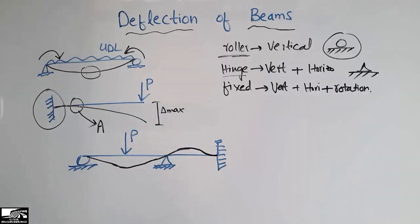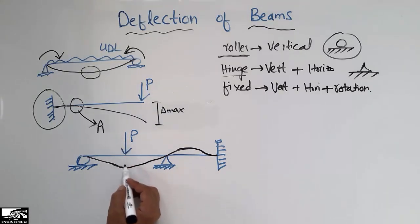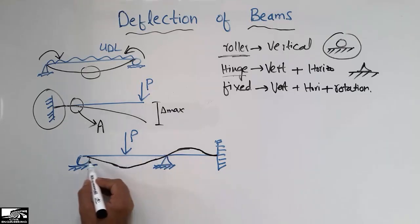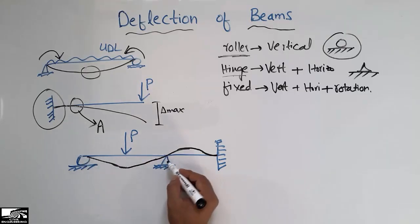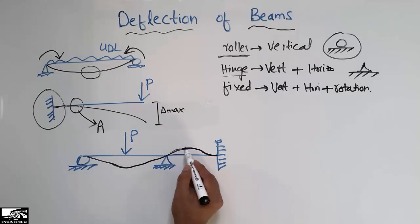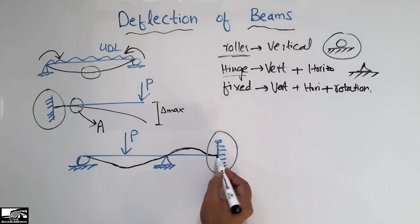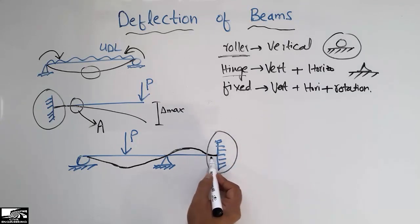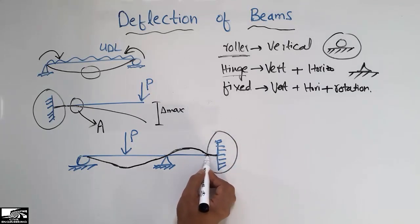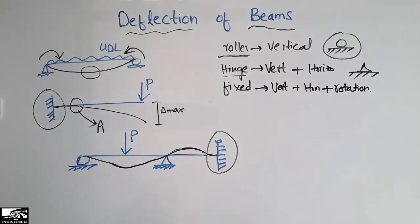The key rule is that your maximum deflection should be at the point where your load is acting. Then you move toward the supports and draw accordingly based on support type. At the fixed support, there will be no rotation, so the diagram must start tangentially — some distance away — reflecting the fixed support property.